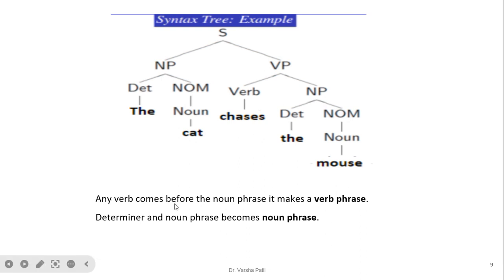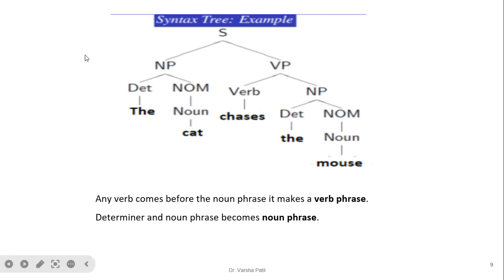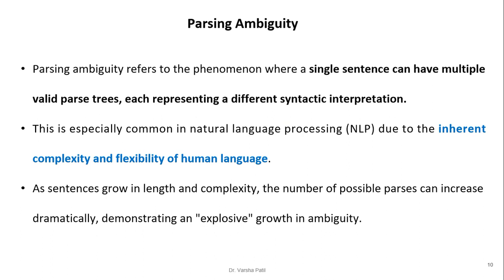In bottom-up parsing: any verb that comes before a noun phrase makes a verb phrase, and a determiner followed by a noun becomes a noun phrase. Even a combination of determiner, adjective, adverb, and noun can again become a noun phrase. So there are a variety of combinations possible.